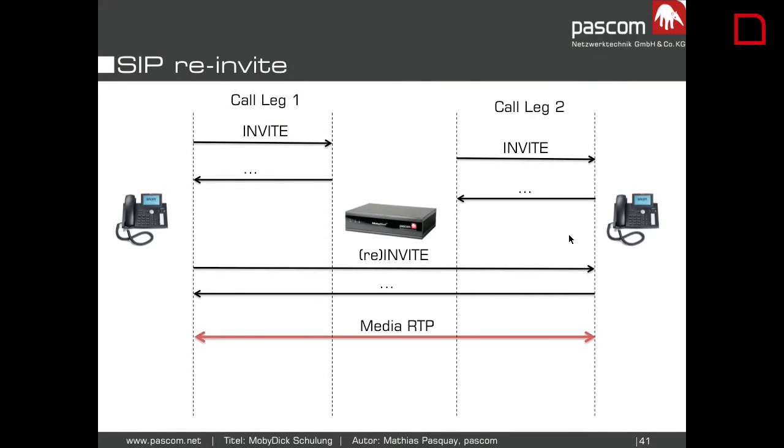From the last video, we said RTP is mostly independent and can take another way through the network. The phones can do something called a re-INVITE. They can say 'hey, we're routing through the Asterisk server but we could talk directly to each other — we don't need the PBX system.' Then they can send data directly from phone A to phone B, bypassing the communication server. I have a slide for that — this is the re-INVITE and this is how it works: after the initial INVITE, a re-INVITE follows and then the media goes directly from phone A to phone B.